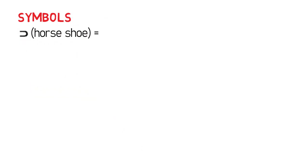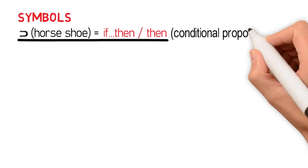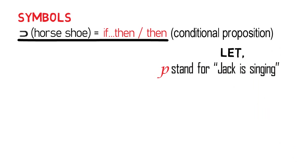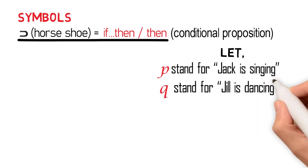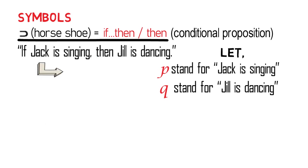The symbol horseshoe, which is read as 'if…then' or just 'then,' is used to symbolize the connective of a conditional proposition. Conditional propositions are connected by the words 'if…then' or just 'then.' Now if we let P stand for 'Jack is singing' and Q for 'Jill is dancing,' then the proposition 'If Jack is singing then Jill is dancing' is symbolized as P ⊃ Q.